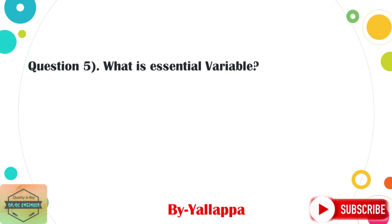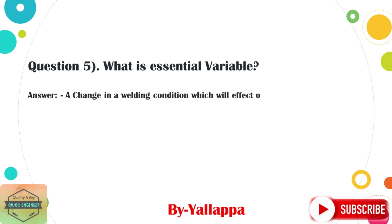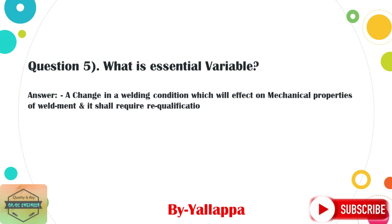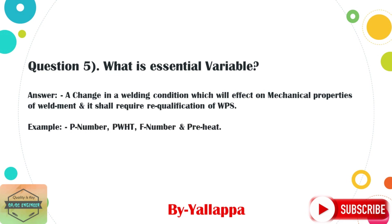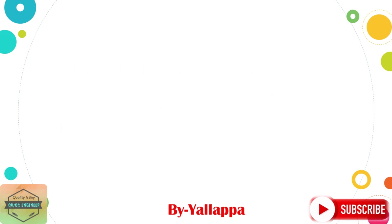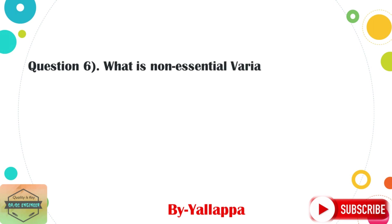Question 5: What is an essential variable? Answer: A change in a welding condition which will affect the mechanical properties of the weldment, and it shall require re-qualification of the WPS. Examples: P number, PQR number, and pre-heat.